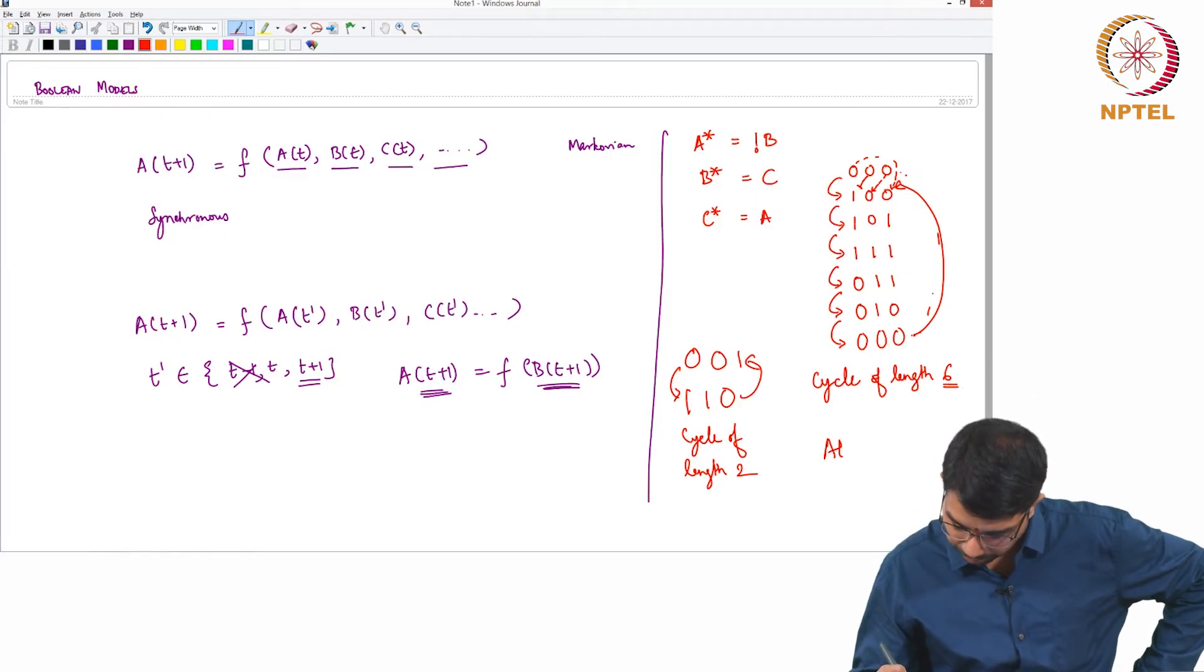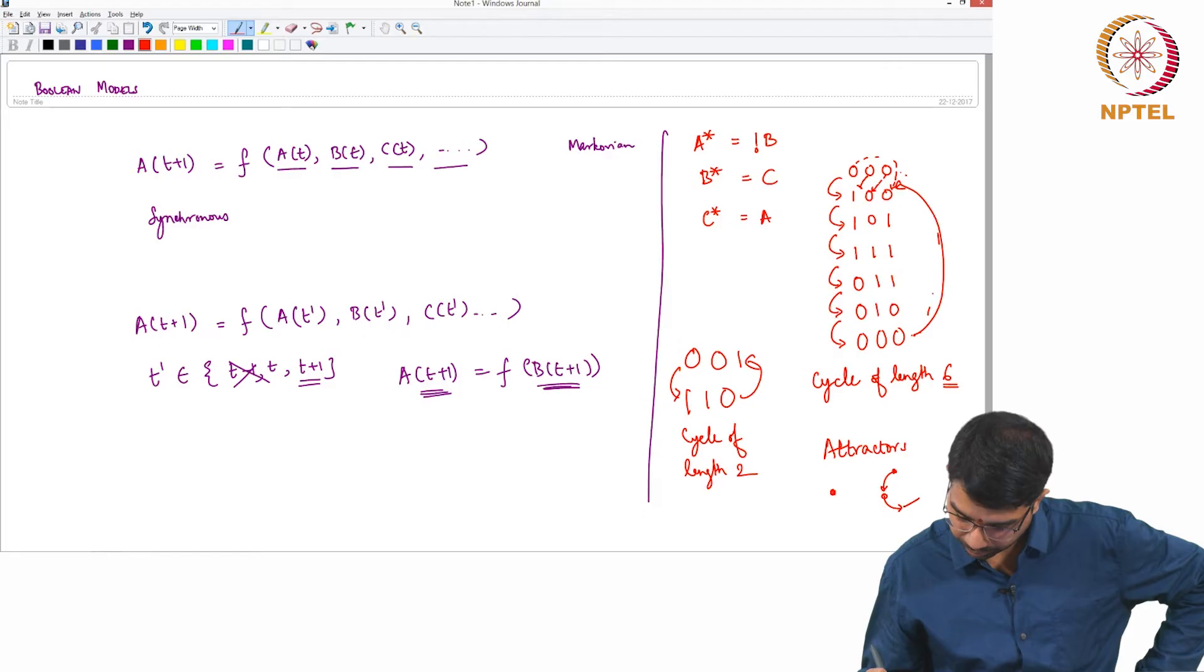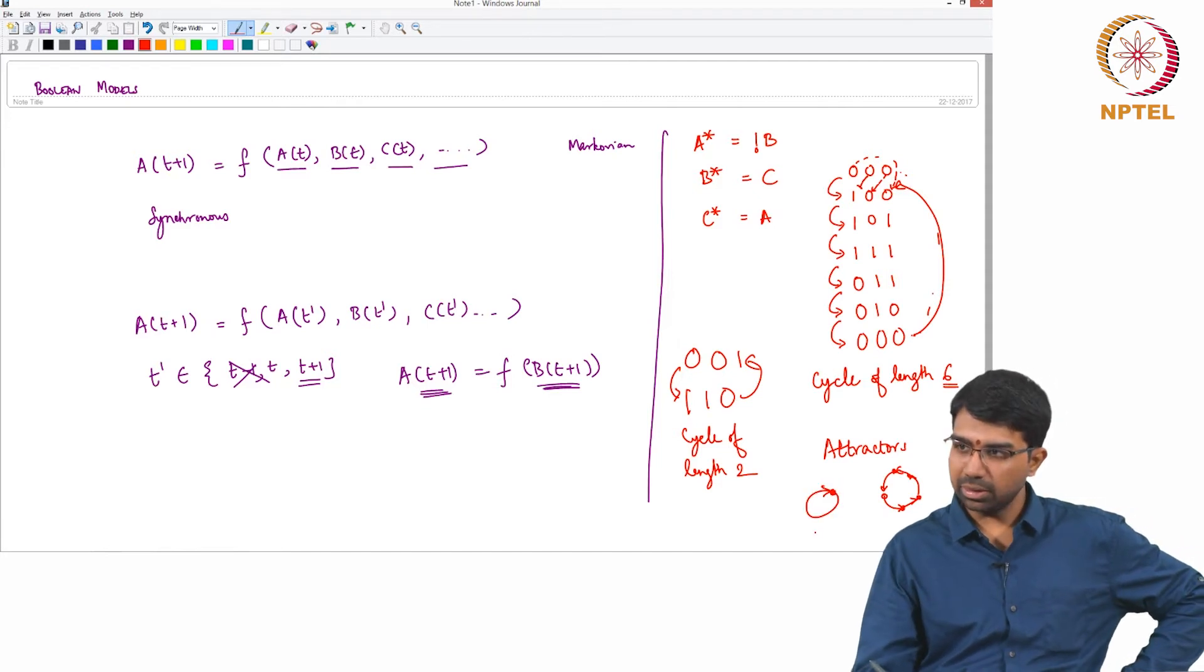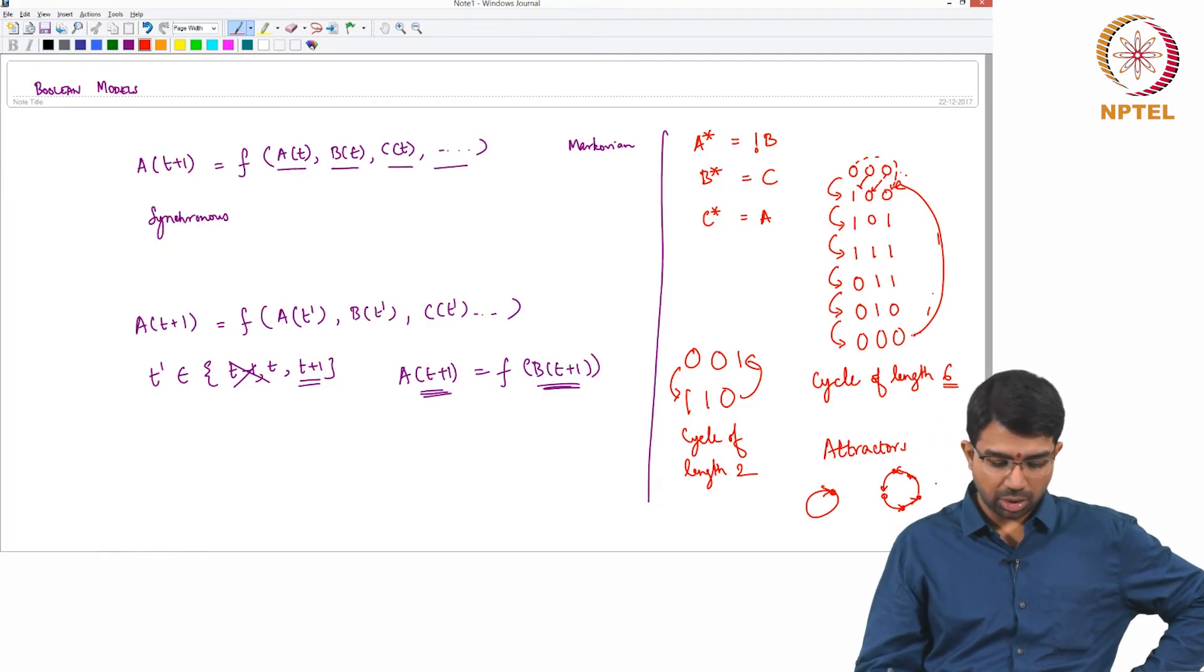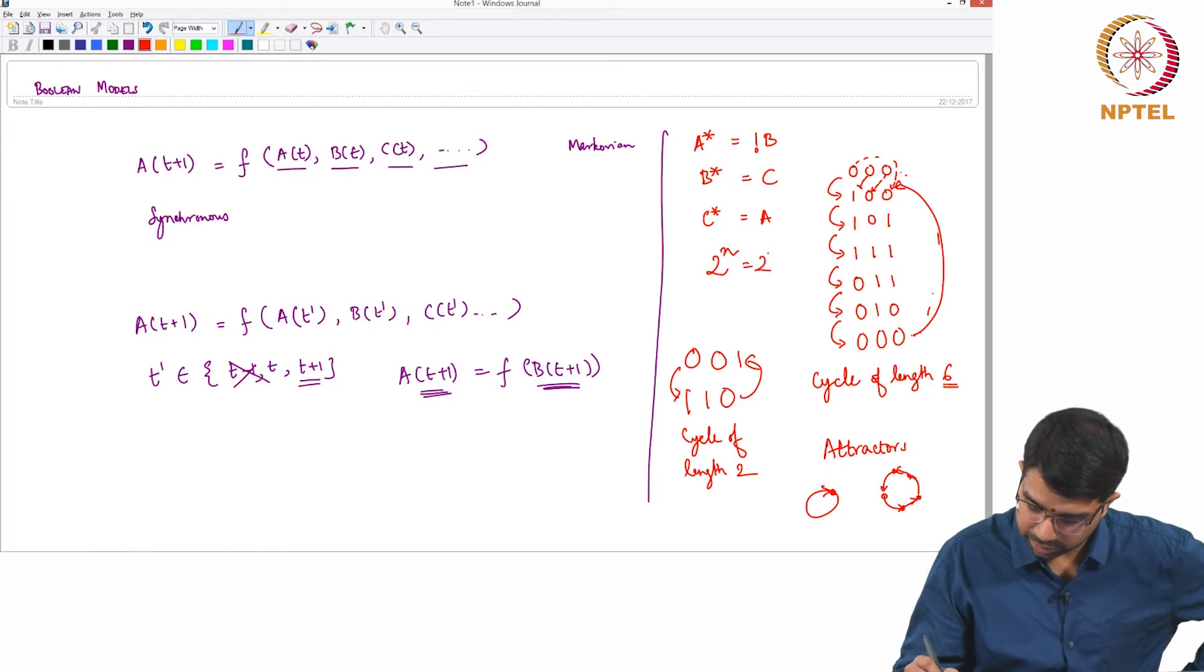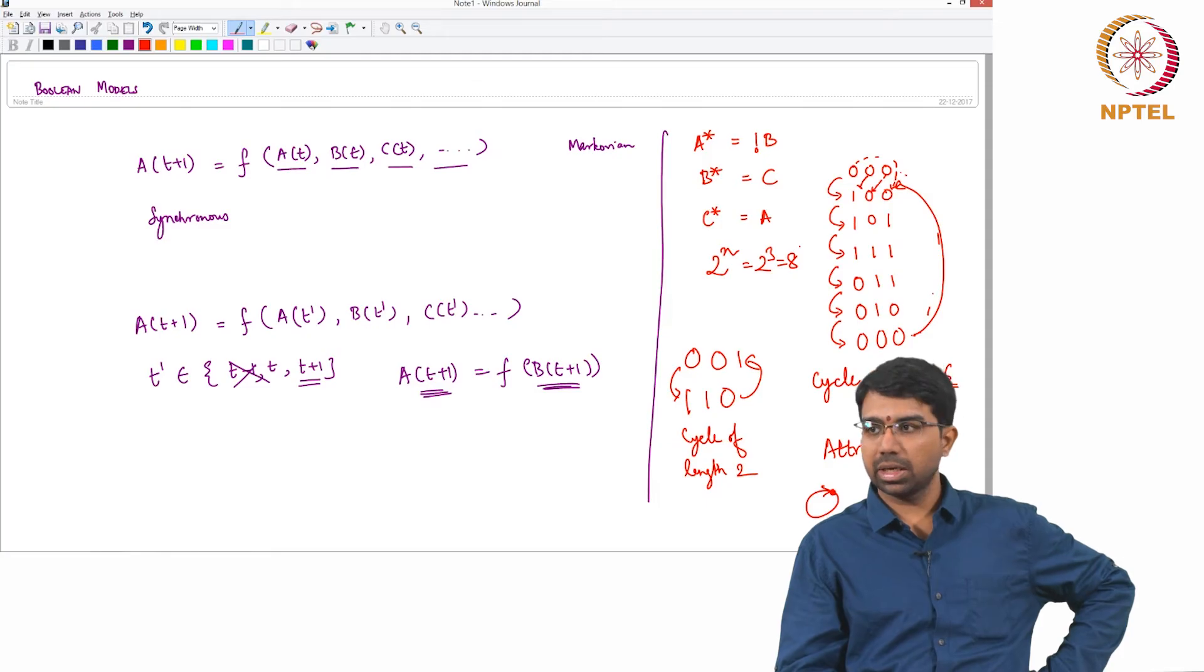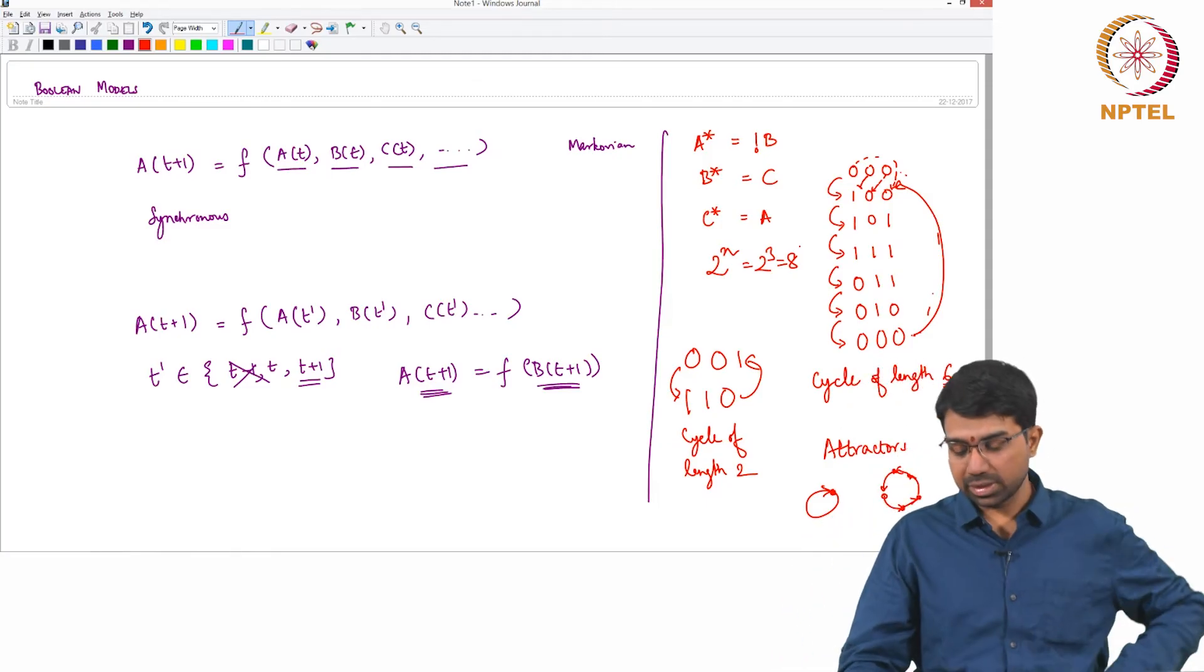You can also call these attractors. You can have a point attractor or a cycle attractor. This would be a point attractor, this would be a cycle attractor. So how many states do we have? We will have 2 to the n, here it is 8 possible states. So we have uncovered what happens to each of the 8 possible states.